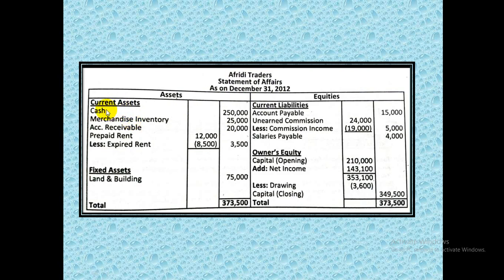Now let's prepare the statement of affairs. This is the specimen in front of you. All assets given in the question on December 31 will be used here — cash, merchandise inventory, receivables. Prepaid rent was 12,000 given, but in our journal entry we credited it by 8,500, so prepaid rent remaining is 3,500. You can directly write 3,500 here, showing the subtraction in brackets. Fixed assets given on December 31 are also included. Total assets come to 3,73,500.